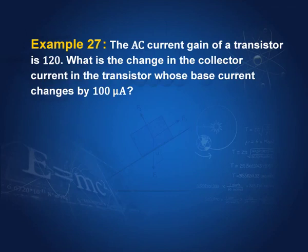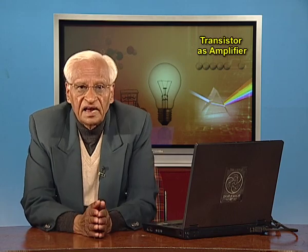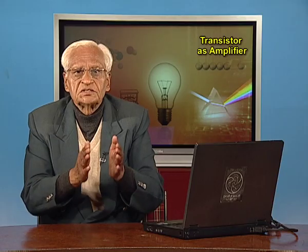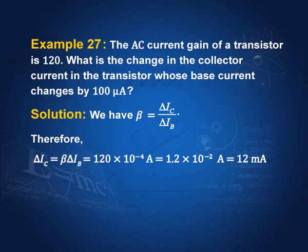The current gain of a transistor is 120. Remember, transistors are built to have a high current gain — you can see the current gain is 120. What is the change in the collector current in the transistor whose base current changes by 100 micro amperes? Remember, base current is usually very small and therefore it is in micro amperes. Beta is delta I_C by delta I_B; delta I_B is 100 micro amperes, beta is 120, so delta I_C is 12 milli amperes.